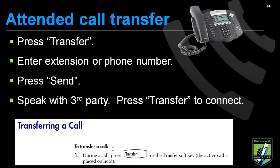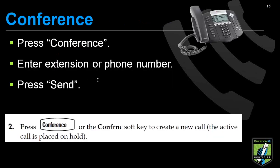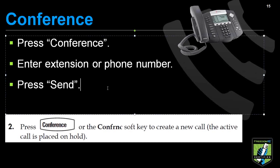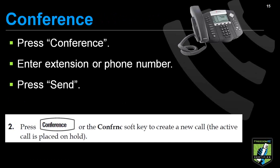The transfer key is also a hard button as well as a soft function key. For conferencing, which is a little bit different: if we start with a live call and press conference, we enter the extension or phone number and hit send. When the third party answers, all three are connected automatically. This differs from the attended call transfer, where you first speak with the third party privately before the caller is connected — on the conference, all three are connected immediately.